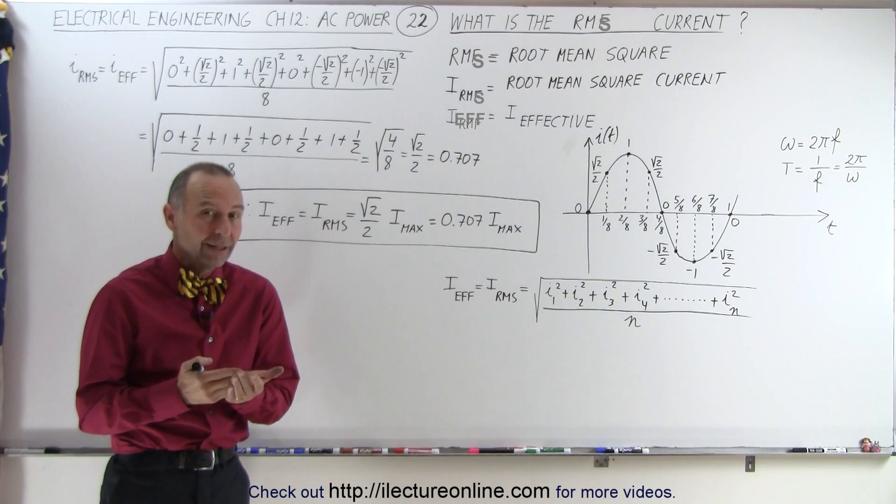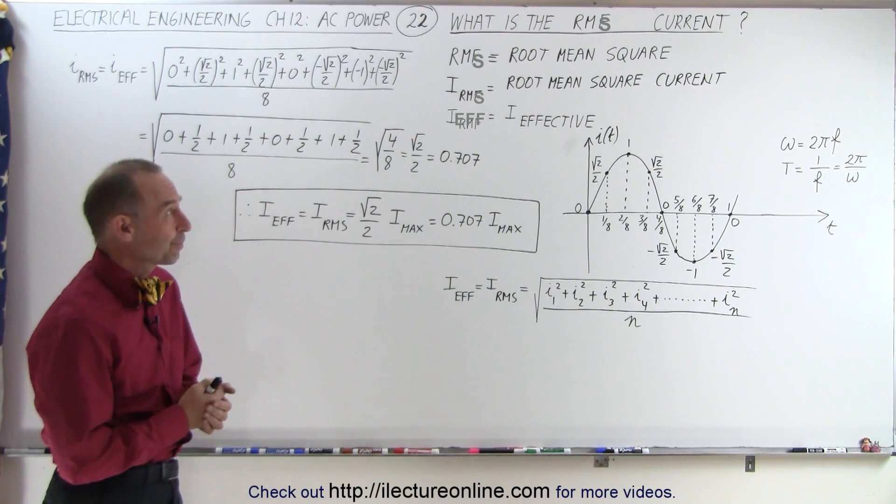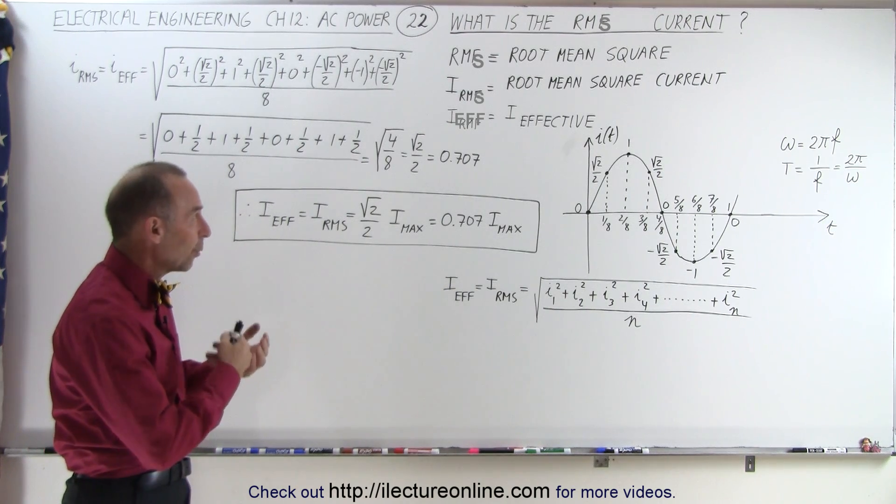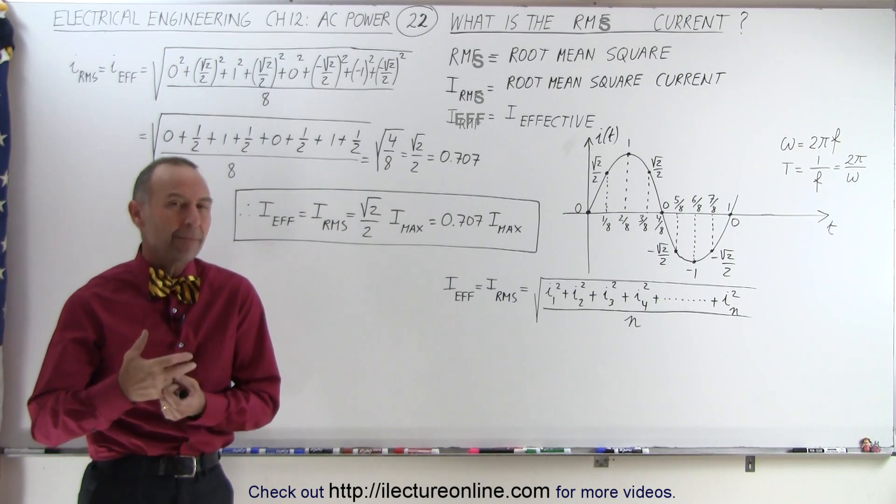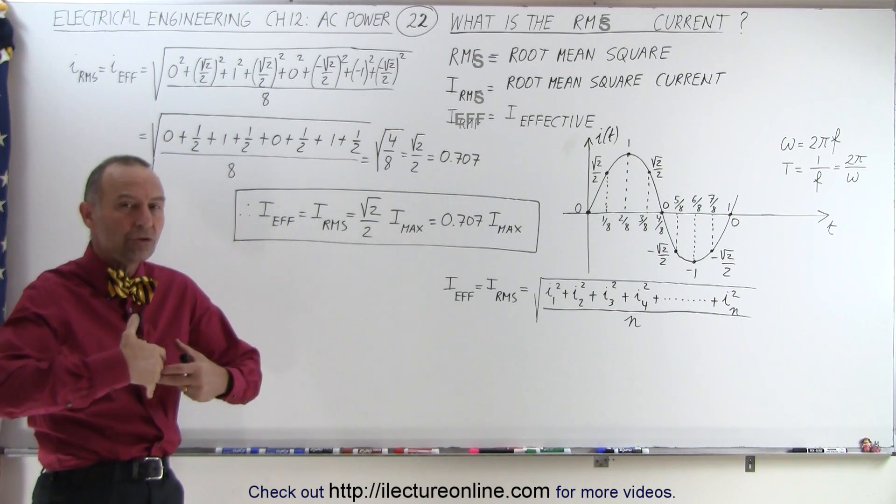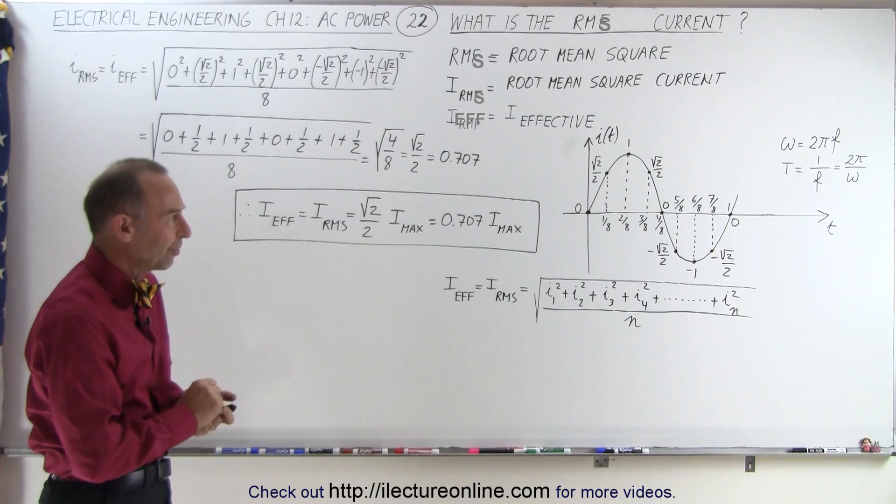Essentially, the effective current and the RMS current is one and the same. How do we find out what the RMS current is, or how do we find what the I effective is, the effective current? There's a way to mathematically calculate that. So here we're going to show you a simple example, and then we're going to show you the general formula of how to do that for any sort of current representation.